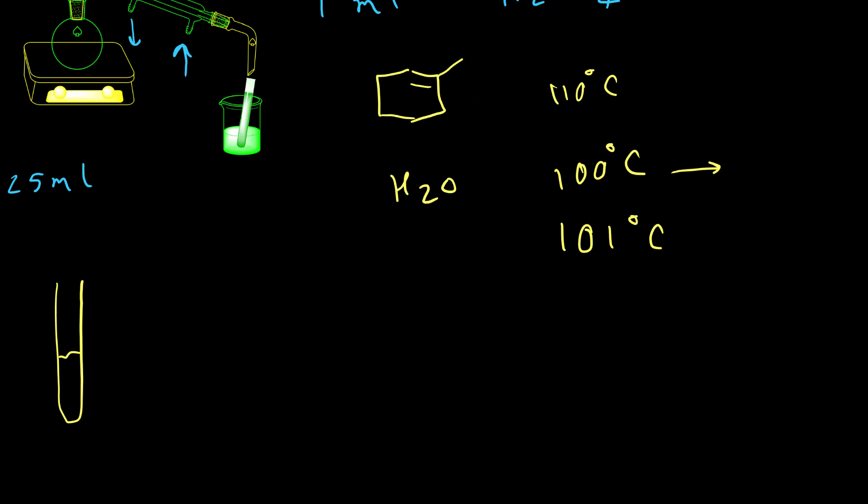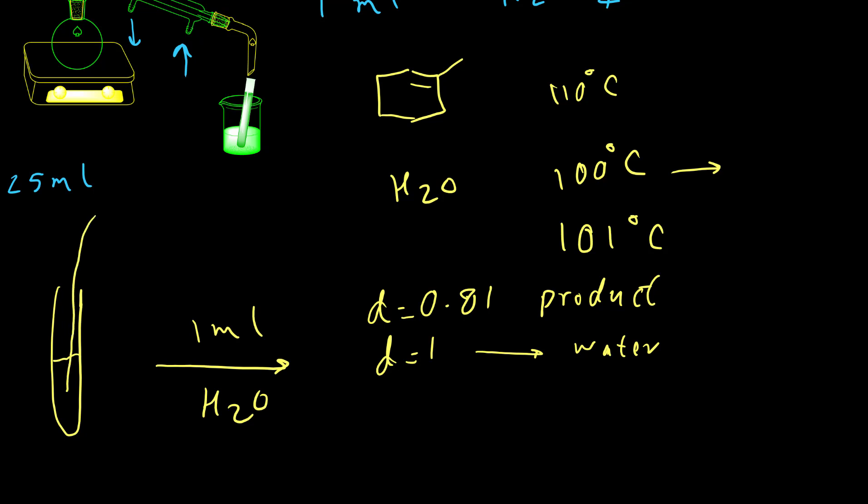After collecting the product inside the tube, first we need to add 1 milliliter water inside the tube. Then close the cap and shake it gently. Once two layers separate from each other again, we need to remove the aqueous phase by pipette. Keep in mind, the density for the product is 0.81 and density for water is 1. So the lower layer is aqueous or water and the top layer is our product. When we want to remove water, we need to put a pipette inside the lower layer and just remove the lower layer.